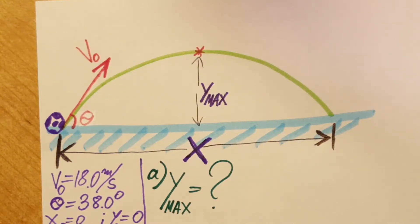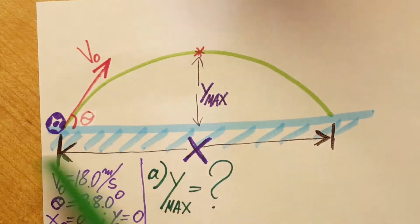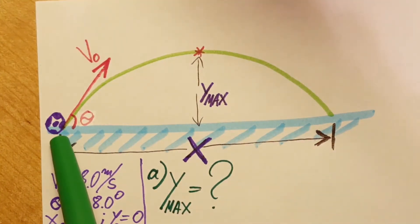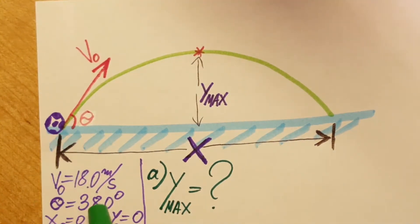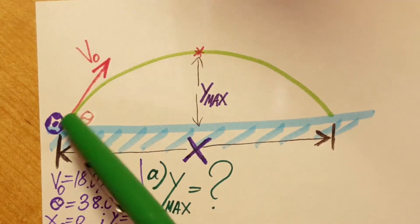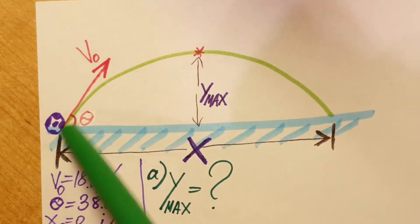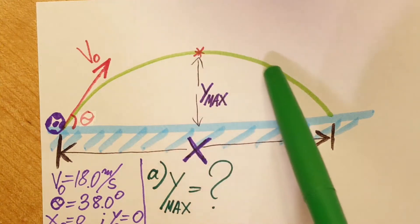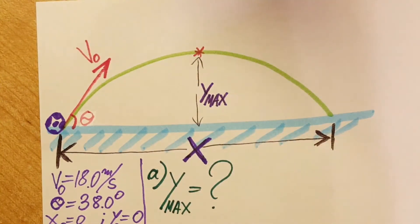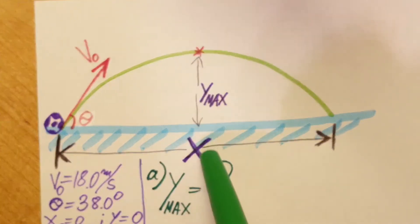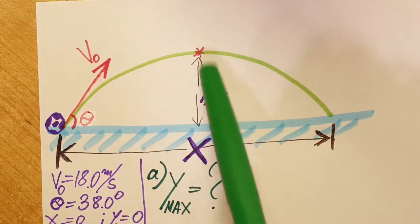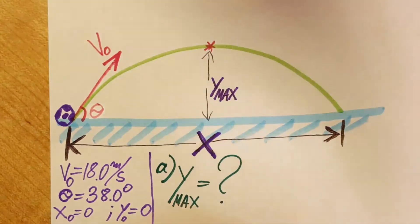Okay, in this physics problem we have a soccer ball that is kicked at ground level with a speed of 18 meters per second and it's kicked at an angle which is 38 degrees to the horizontal right here. The ball travels along this parabola and they're asking us in the first part to find y_max, which is right here at the vertex of its parabola. So that's what they want us to find in the first part.